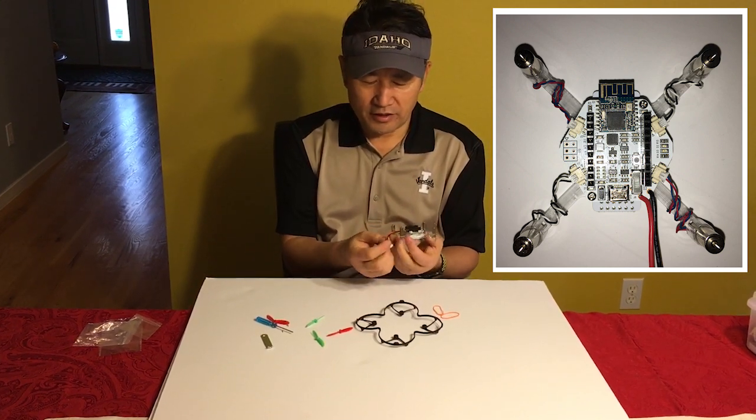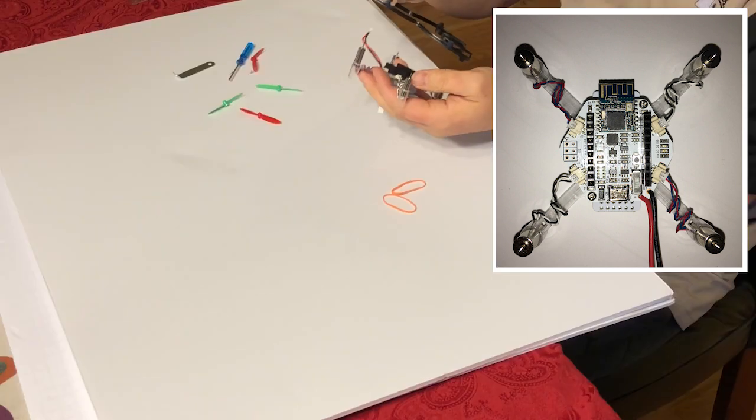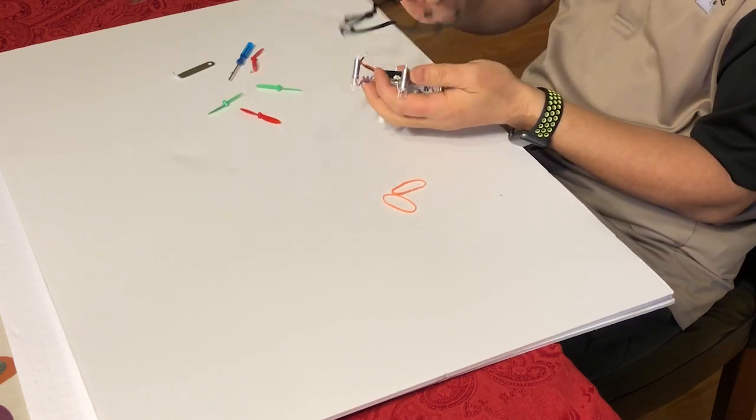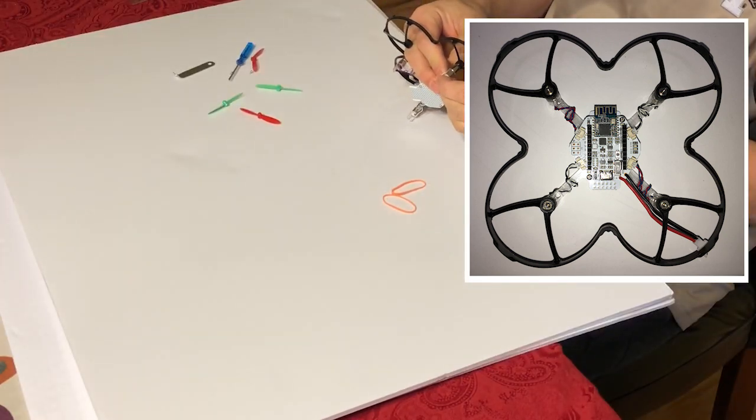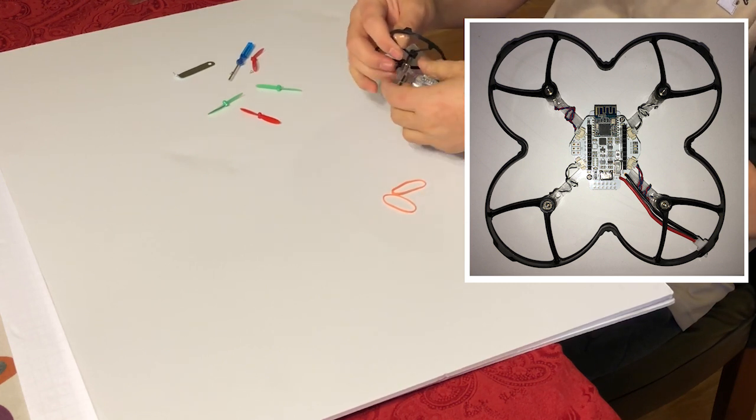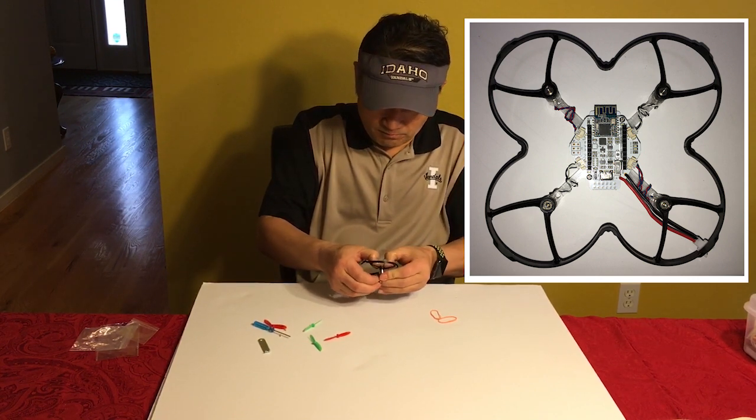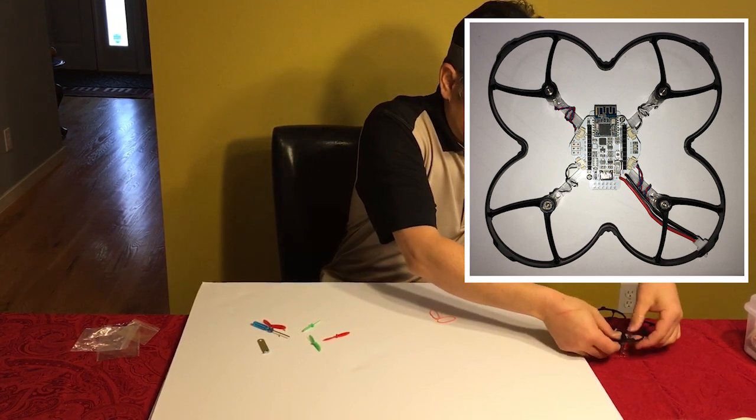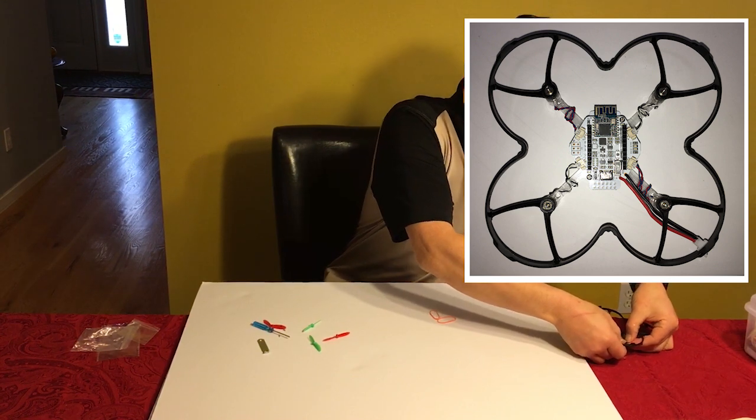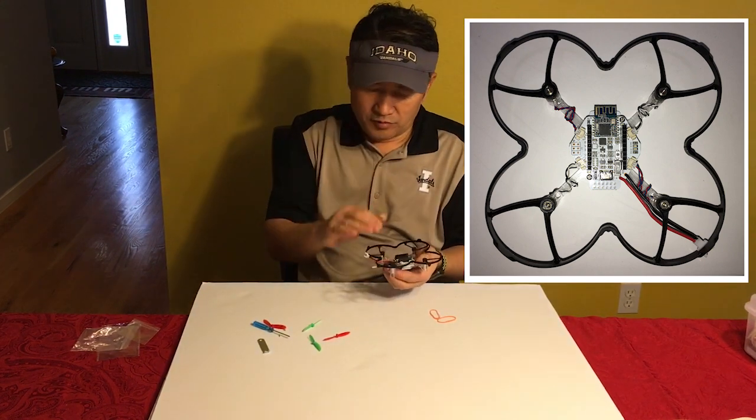So now we've put together all these motors and the battery compartment. Before we connect the battery electricity, I would like to put this propeller safety guard. Just put this one on the top. Use your finger a little bit. Put this in. Or you can use hard ground to put this in. Sometimes it's very tight. Yeah.